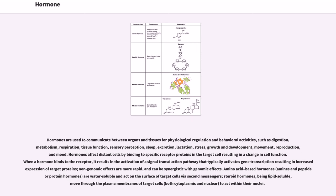Hormones are used to communicate between organs and tissues for physiological regulation and behavioral activities, such as digestion, metabolism, respiration, tissue function, sensory perception, sleep, excretion, lactation, stress, growth and development, movement, reproduction, and mood.